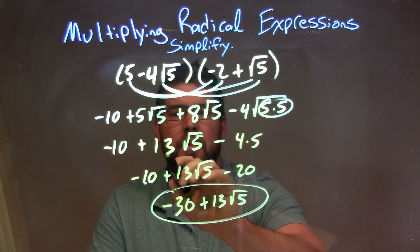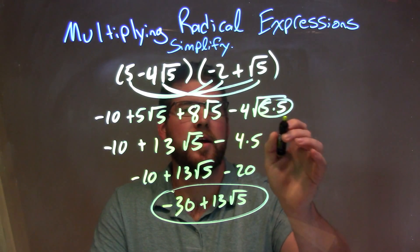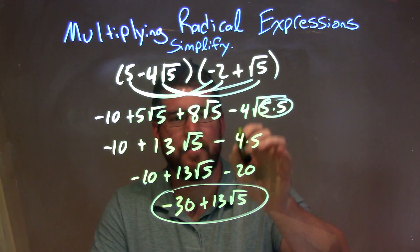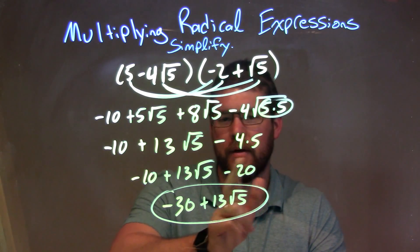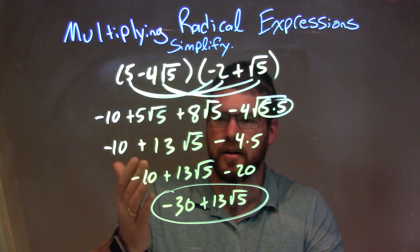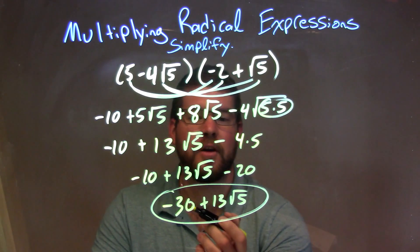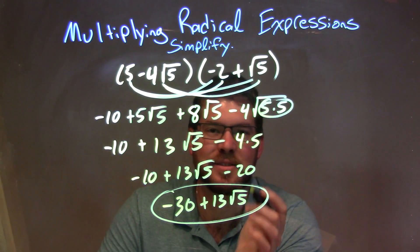Simplified that, combined these two to get 13 square root of 5, and this pair here brought the 5 outside to have it just as 4 times 5. 4 times 5 was 20. Then we have the minus 20 here and the minus 10. Then combine them together to give us our final answer of minus 30 plus 13 square root of 5.